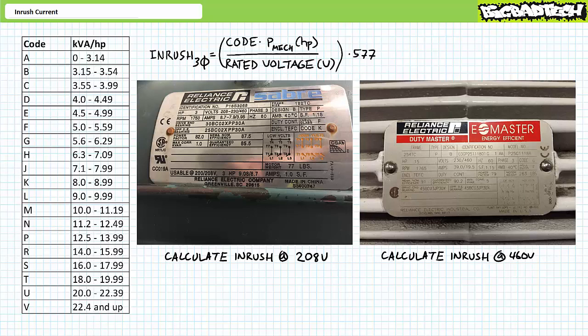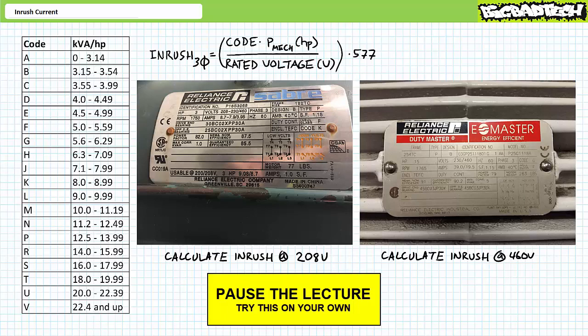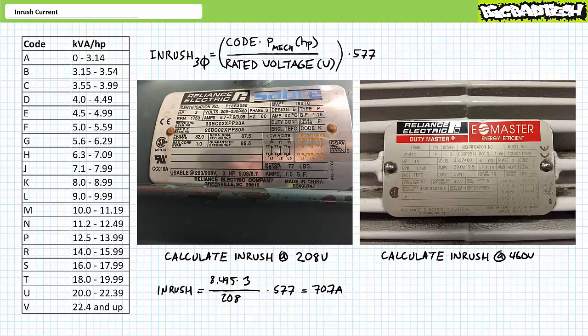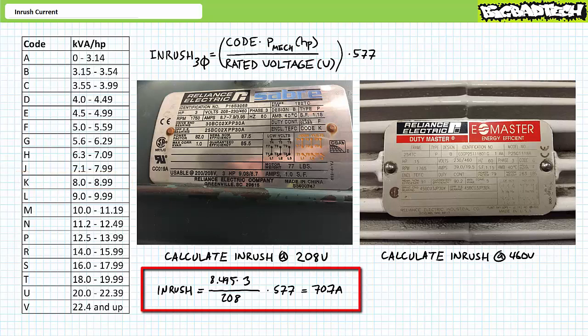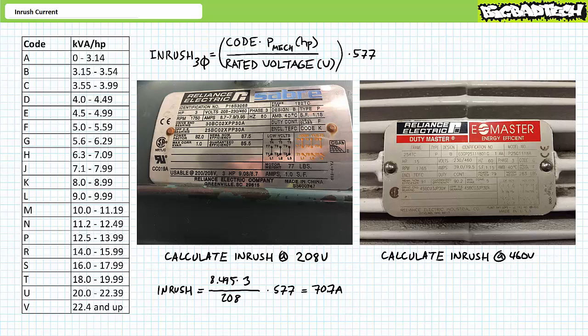Given the data in the motor nameplates and the kilovolt ampere per horsepower constant table, calculate the anticipated average inrush for two motors in their specified voltage configurations, using the center of mass — or average — of the kilovolt ampere per horsepower constant. The first example features a three horsepower motor intended to operate using 208 volt three-phase AC in the low voltage configuration with a locked rotor code of K, meaning a kilovolt ampere per horsepower constant with a low of 8 up to a high of around 9, giving a center of mass of 8.5. Substituting this value, the power rating, and the rated voltage into the inrush equation results in an estimate of roughly 70.7 amps — approximately 8.1 times the rated current of 8.7 amps in the low voltage configuration.